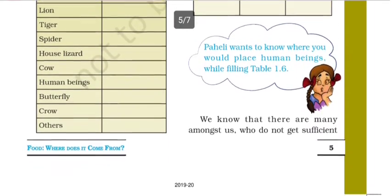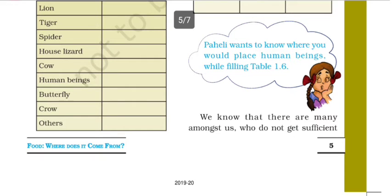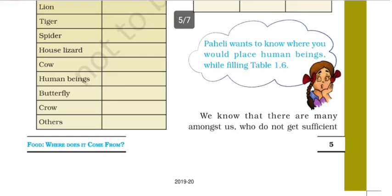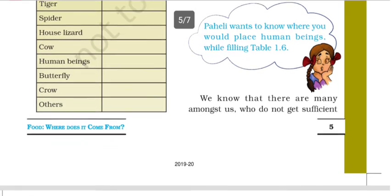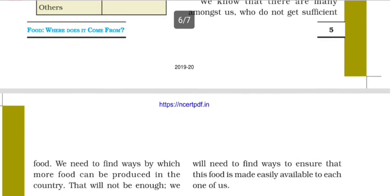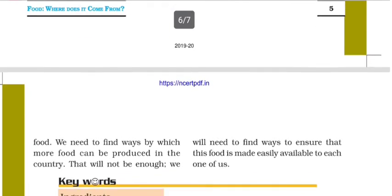We know that there are many amongst us who do not get sufficient food. There are many people who don't get sufficient food in their homes, while there are also many people who have extra food. Some people on the roads and in their homes don't have any food for even one day.